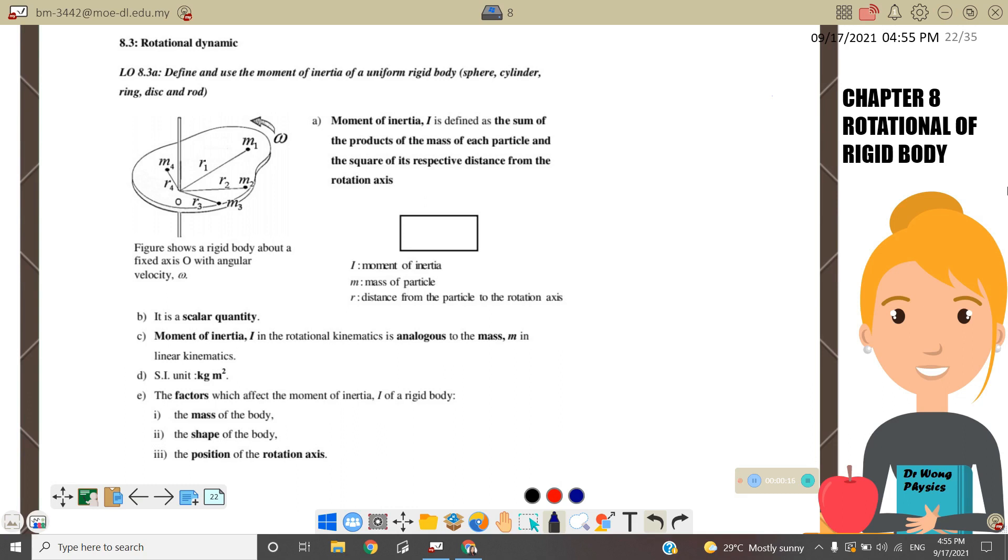Moment of Inertia I is defined as the sum of the product of the mass of each particle and the square of its respective distance from the rotational axis. Therefore, we can write it as I equals M1 R1 square plus M2 R2 square plus M3 R3 square and so on.